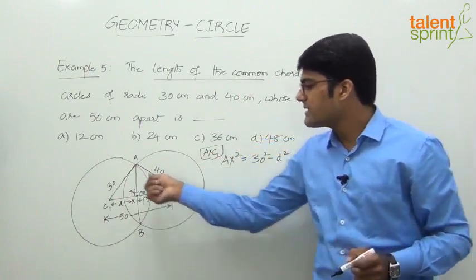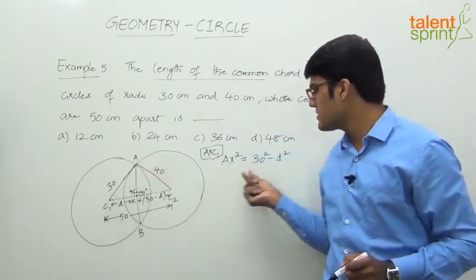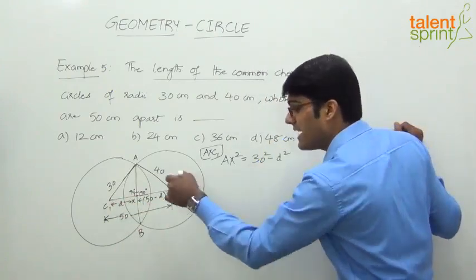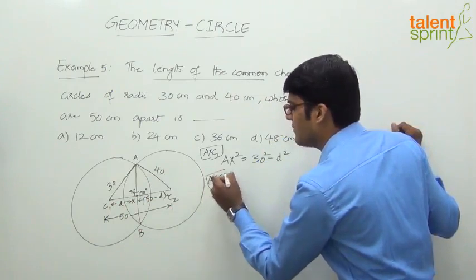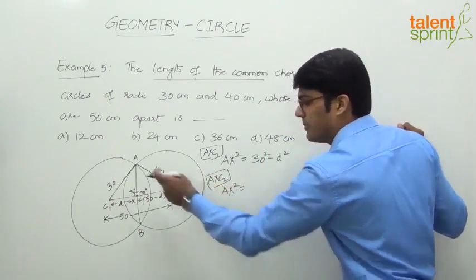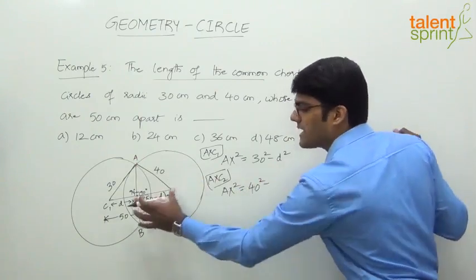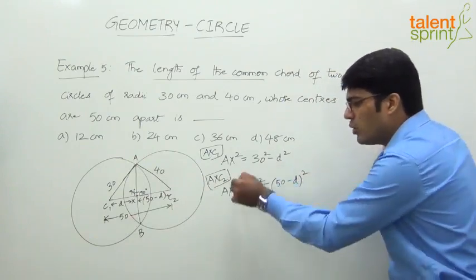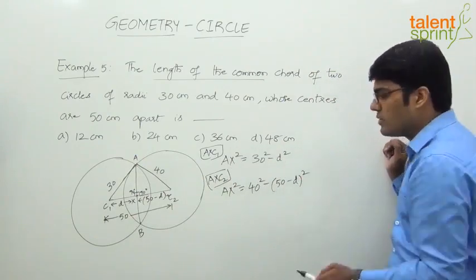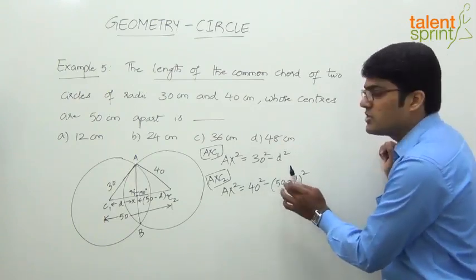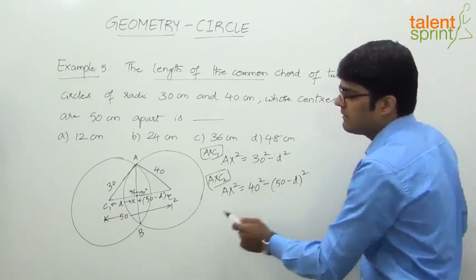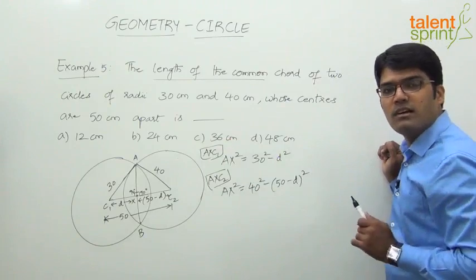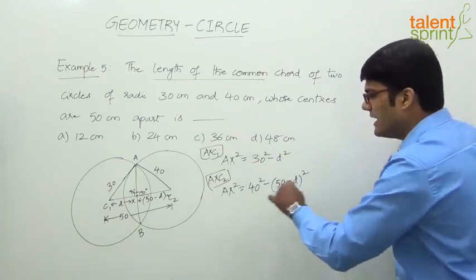From triangle AX-C2, AX squared equals 40 squared minus (50 minus d) whole squared, where 40 is the hypotenuse and (50 minus d) is the base. Since both expressions equal AX squared, we can equate them. Once we get the value of d, we substitute back to find AX, and then AB equals 2 times AX.